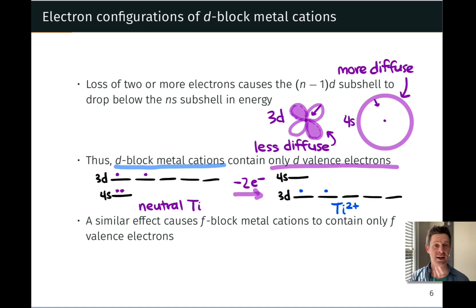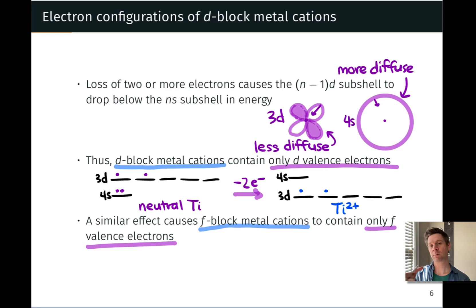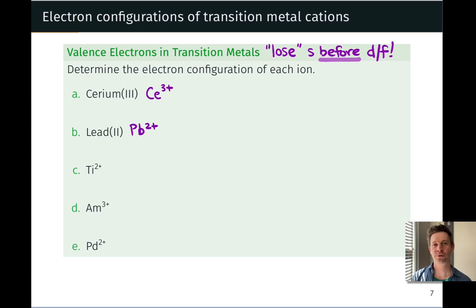A similar thing happens in the F block. When electrons are lost from the atom, the S orbitals become higher in energy than the F orbitals, so F-block metal cations contain only F valence electrons. Applying this as a rule makes it relatively easy to write electron configurations for transition metal cations: just lose the appropriate number of electrons based on the charge, then put all remaining valence electrons into a D or F subshell with the principal quantum number for the appropriate row. We'll practice this for transition metals, lanthanides, and actinides.